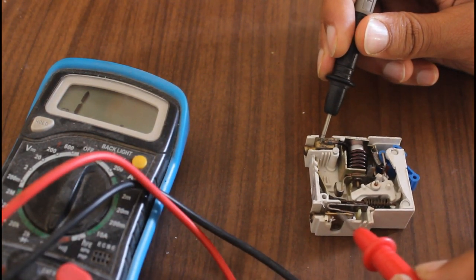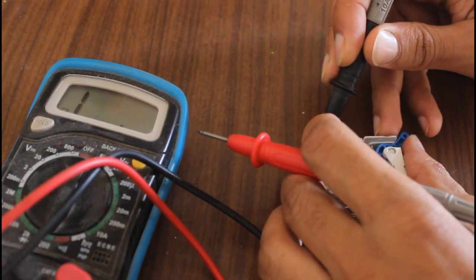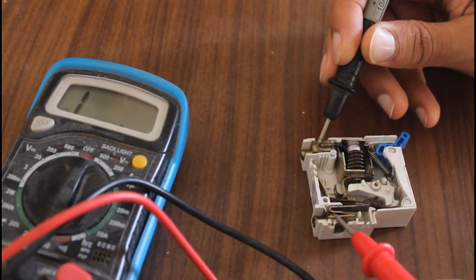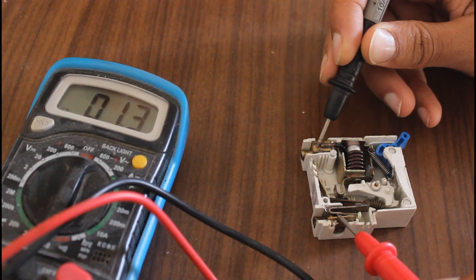Testing the resistance between these two terminals, when the switch is off it's showing infinite resistance and when we switch on the MCB it's showing around 20 to 30 ohms which is negligible.